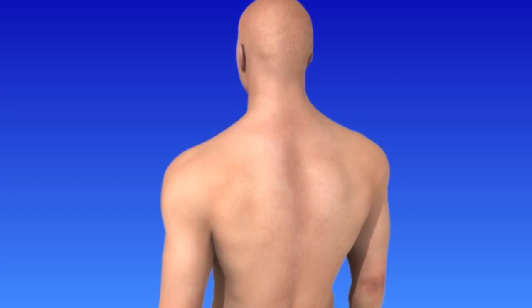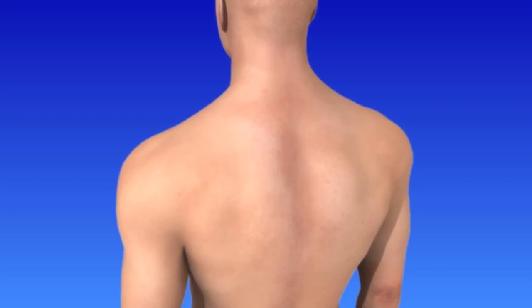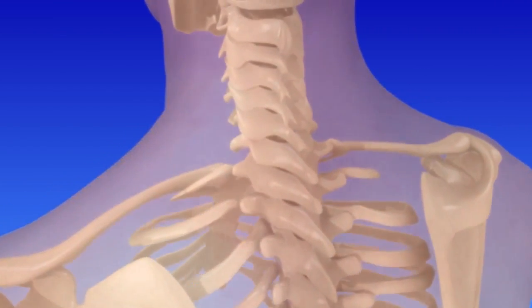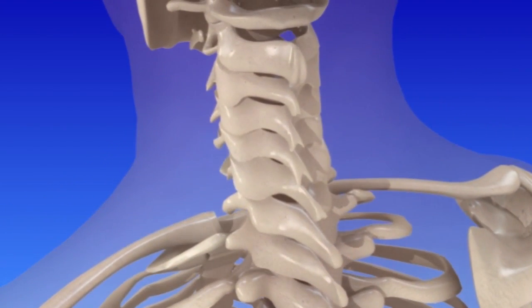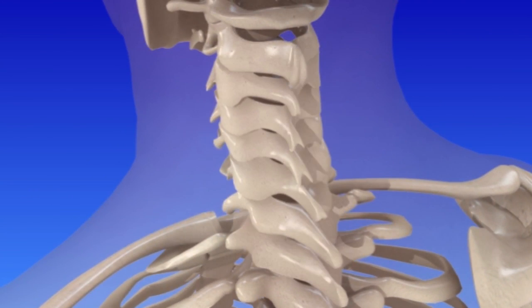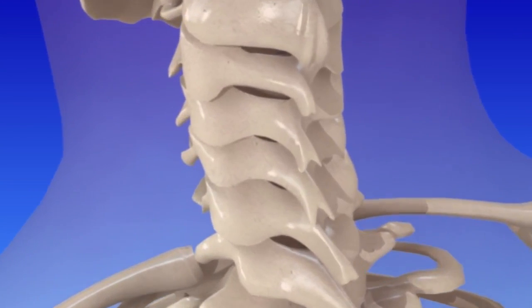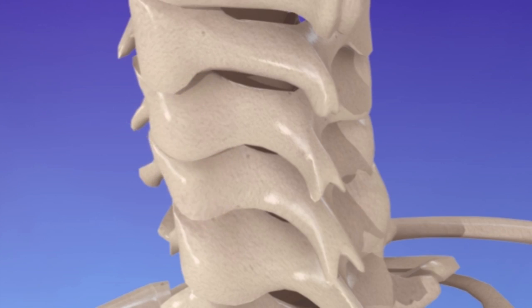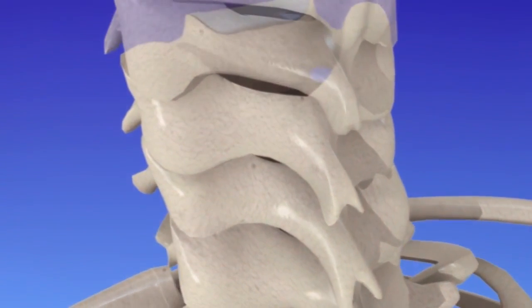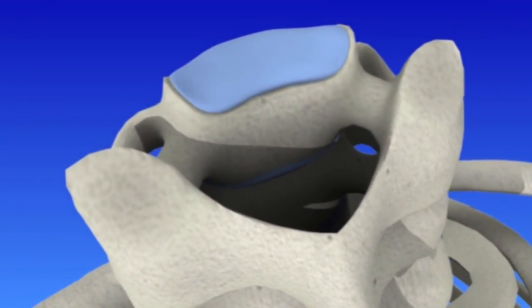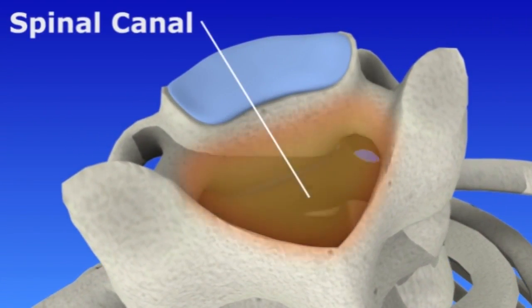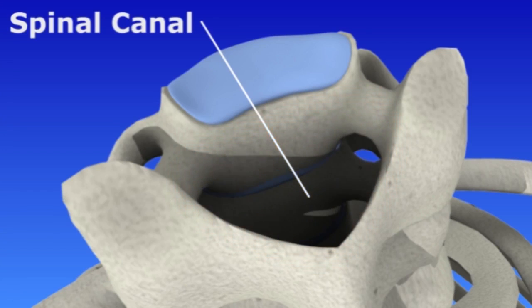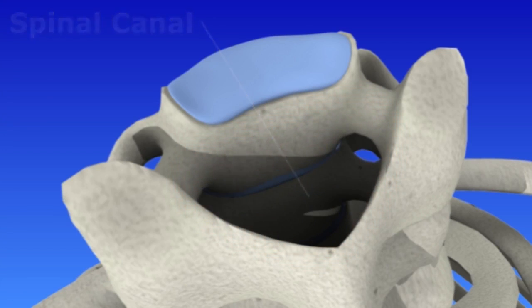The cervical area of the spine is located in your neck. Seven small bones called vertebrae make up the cervical spine. Except for the first two, a pair of stabilizing facet joints connect each of the bones in the spine. The opening in the center of each bone forms the spinal canal. The spinal cord is located within the protective spinal canal.